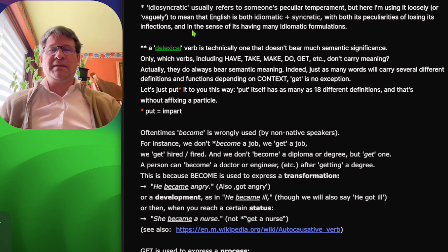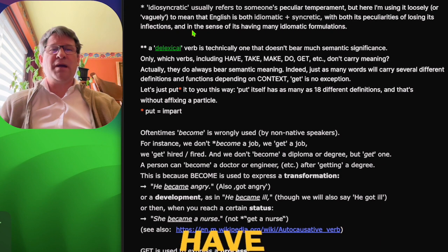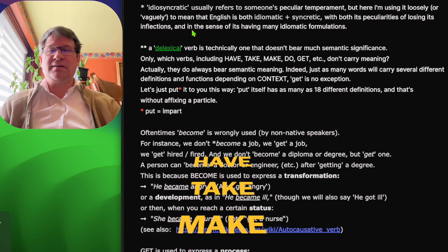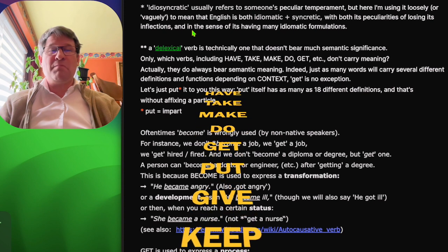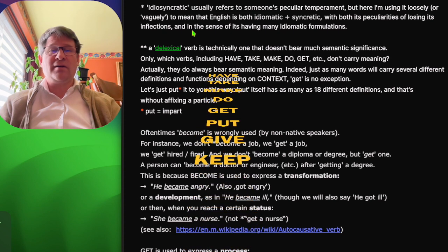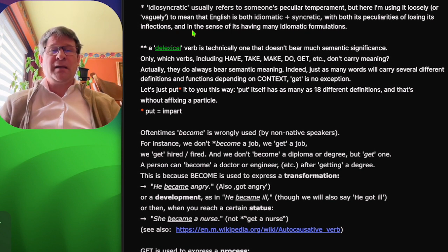A delexical verb is technically one that doesn't bear much semantic significance. Only, which verbs including have, take, make, do, get, etc., don't carry meaning. Actually, they do always bear semantic meaning. Indeed, just as many words will carry several different definitions and functions depending on context, get is no exception.